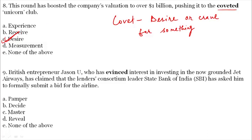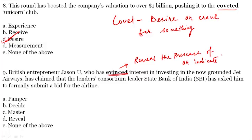Question number 9. 'British entrepreneur Jason Yu, who has evinced interest in investing in the now-grounded JetLite, has claimed that lenders' consortium — consortium is an association of people — leader State Bank of India has asked him to formally submit a bid for the airline.' The bold word is 'evinced.' Evinced means to reveal the presence of, or indicate. So the direct synonym is 'reveal.' Evinced and reveal are synonymous.